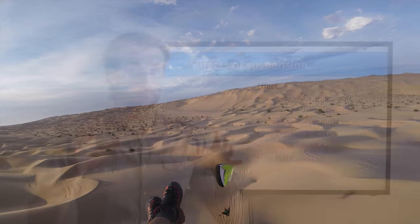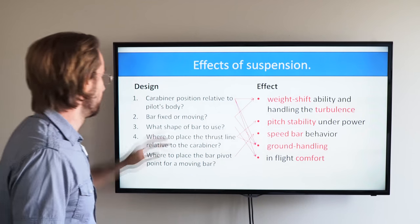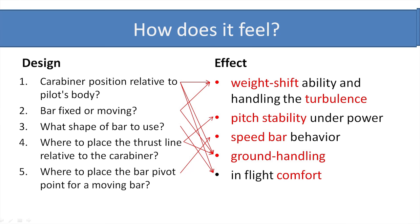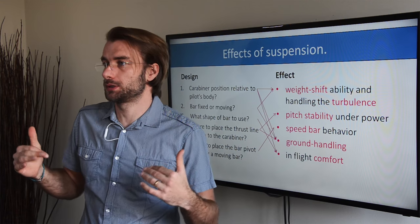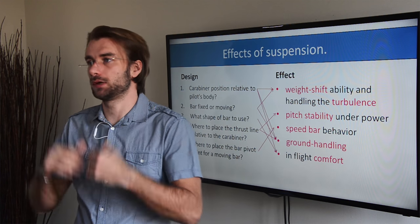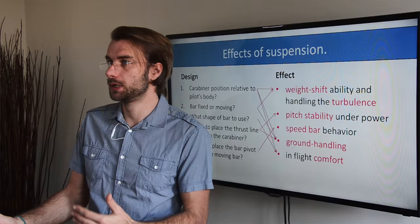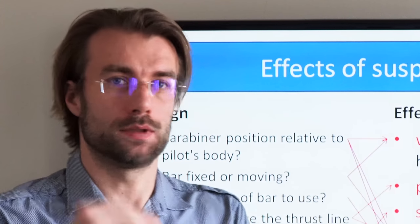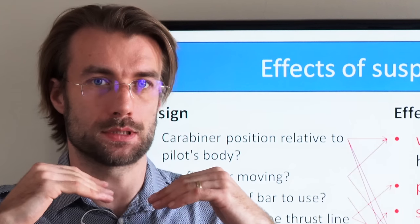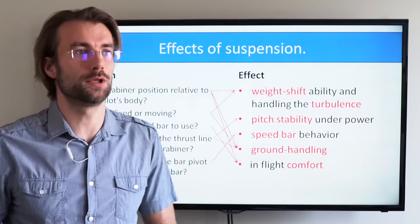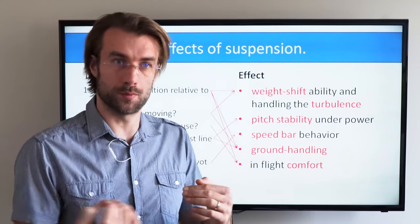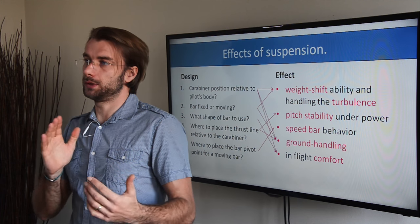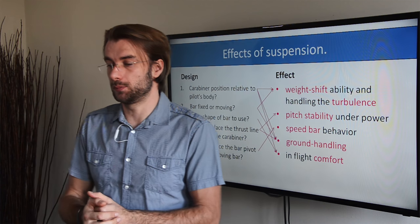So now it's getting a little bit messy. Here you have the design options for the designer, and here the effect. The position of the carabiner and moving bars define how much weight shift authority you have and how the paramotor will handle turbulence. The position of the thrust line relative to the carabiners defines the pitch stability of the paramotor, and the shape of the bar and the pivot point of the bar defines how the paramotor will behave when you push the speed bar.